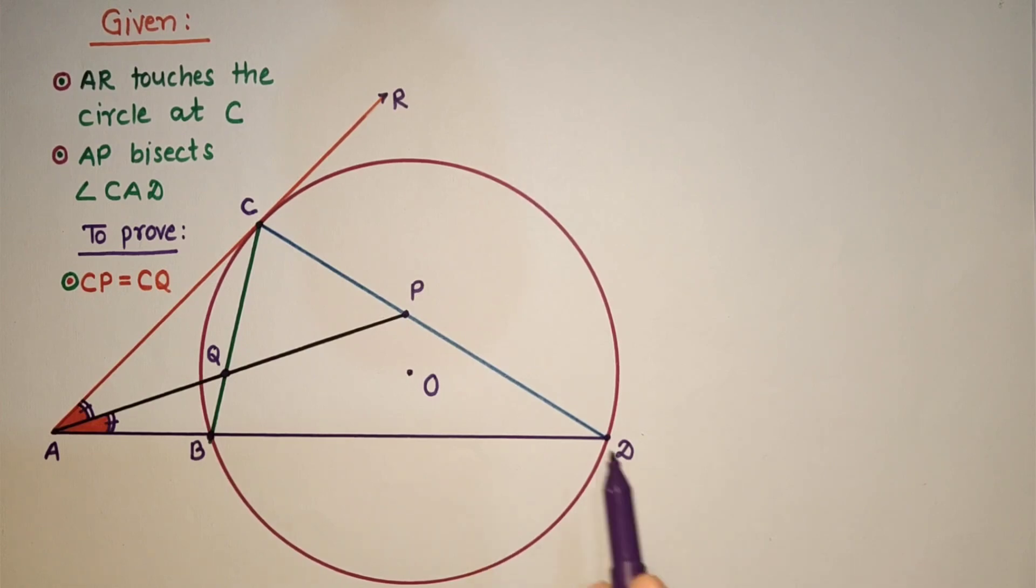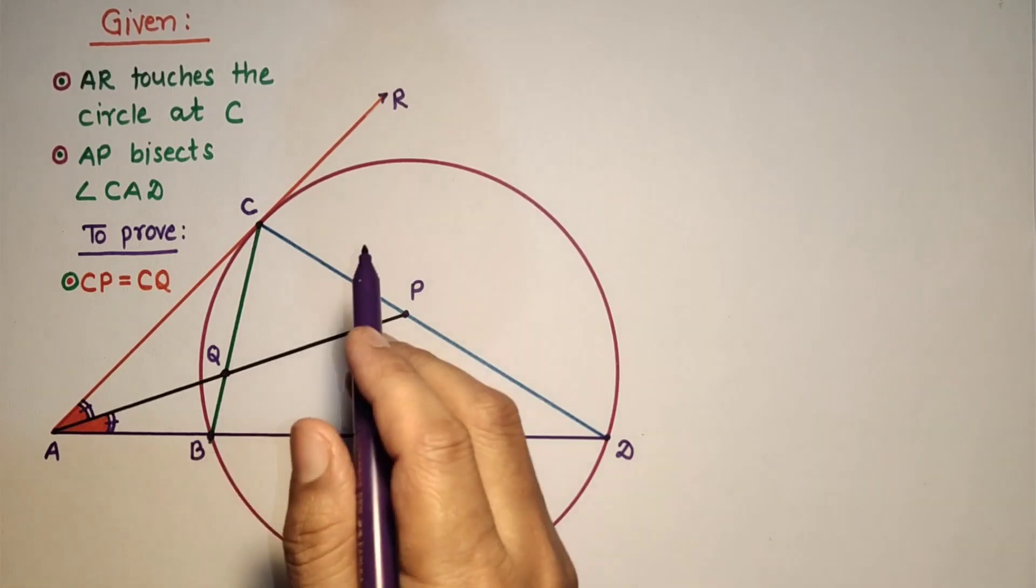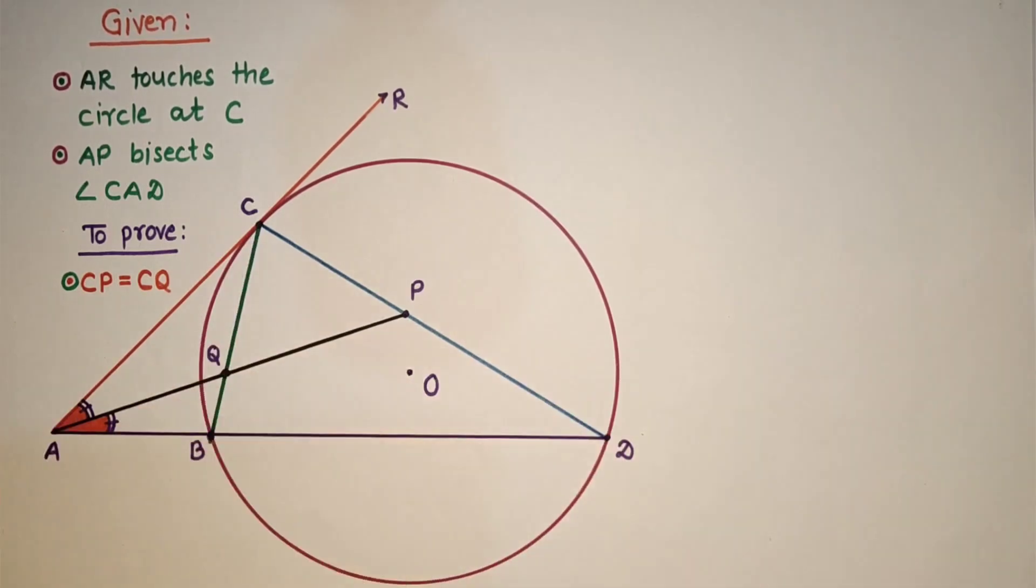In the question we are given a circle with center O. AC touches the circle at point C. AB is a secant.